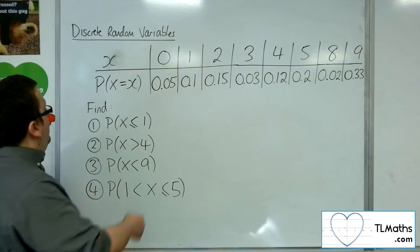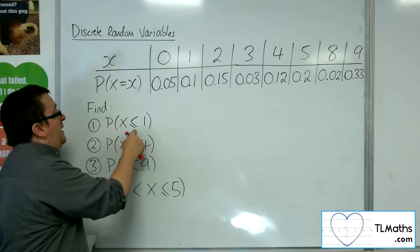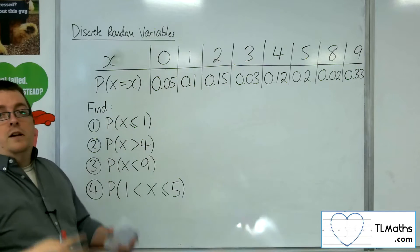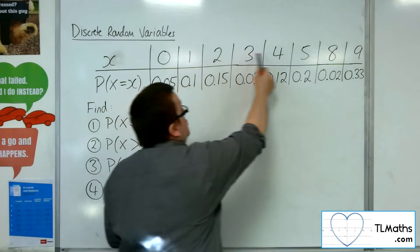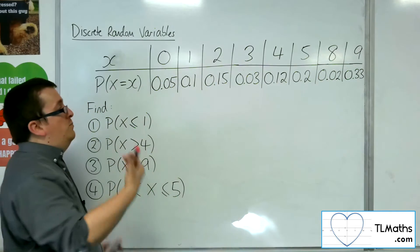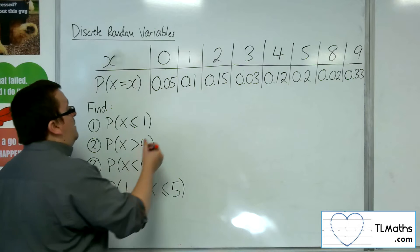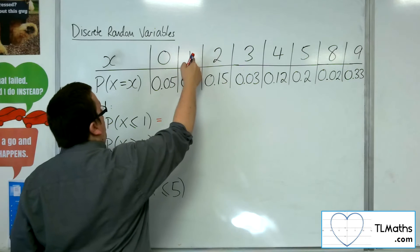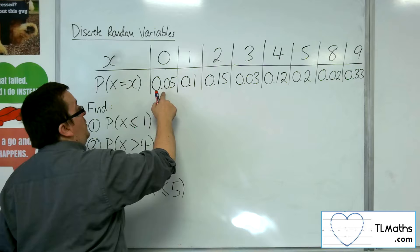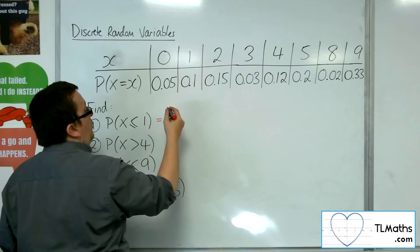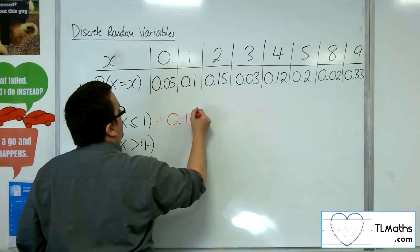So for this first one, what is the probability of x being less than or equal to 1? Okay, so it's effectively, these are the scores that I can achieve. What's the probability of scoring less than or equal to 1? So that means either scoring 0 or 1, and so that's 0.05 plus the 0.1, so 0.15.